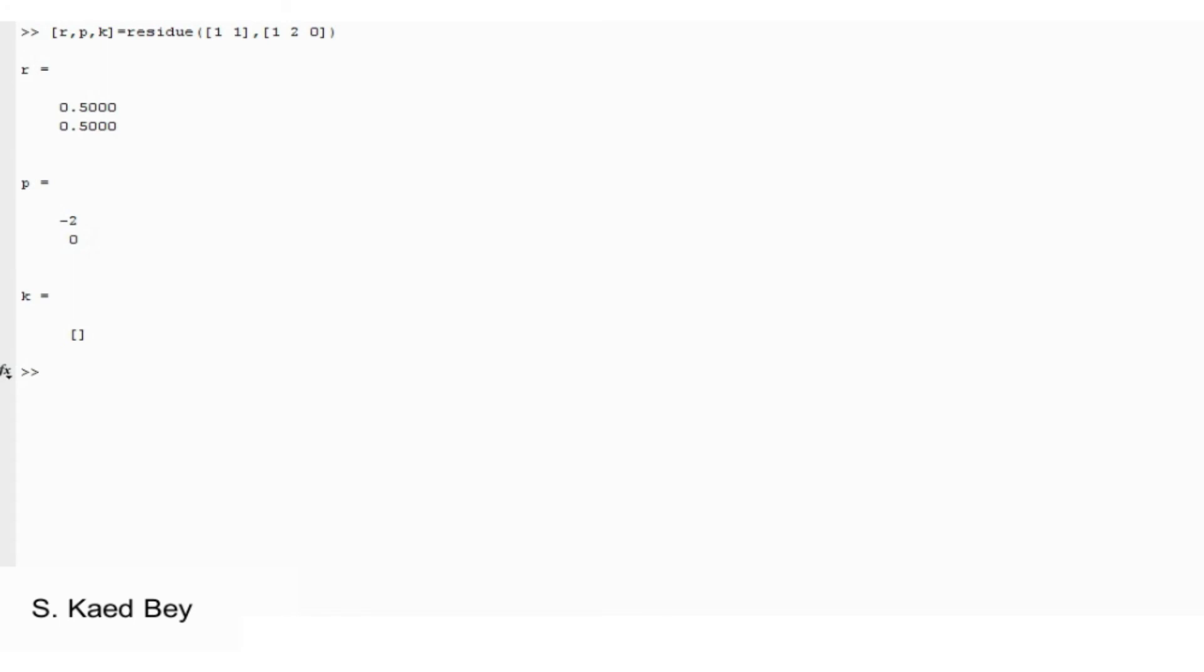So as long as your denominator order is higher than that of the numerator, the k will be always empty. This means there are no direct terms.